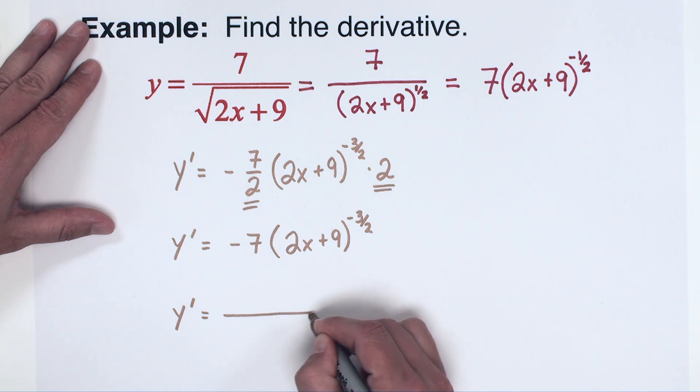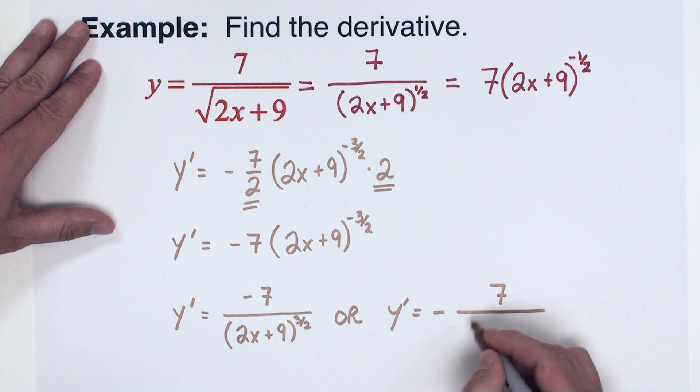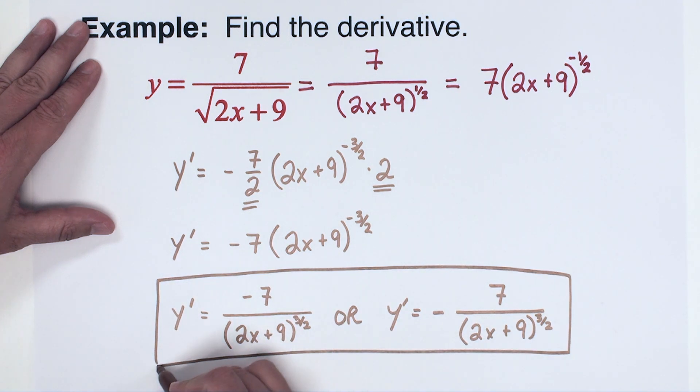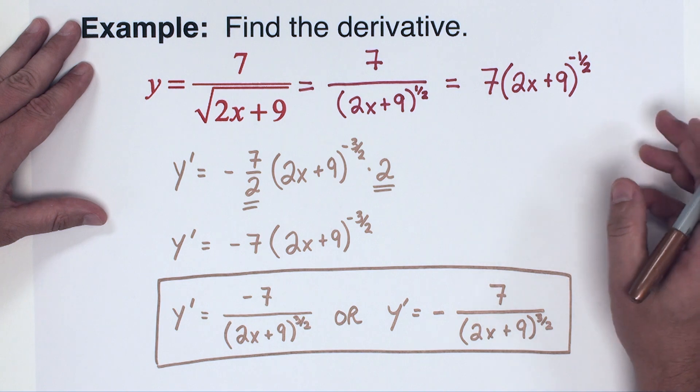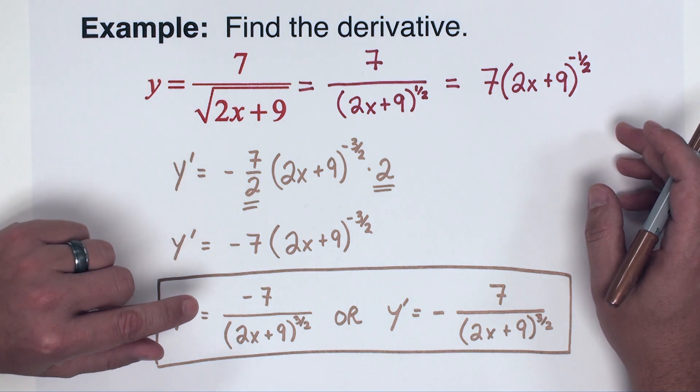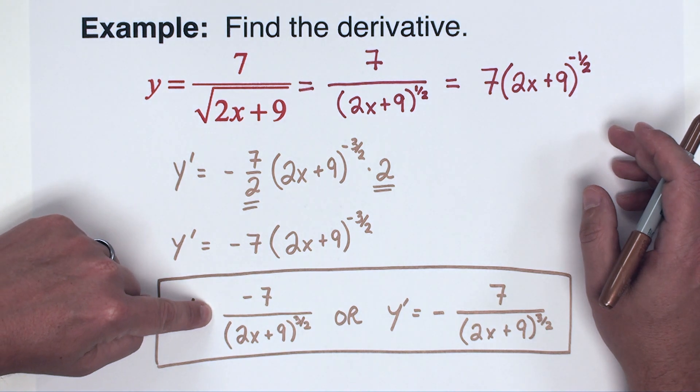So y prime is going to be negative 7, and then the denominator will have quantity 2x plus 9 to the positive 3 halves power. And of course that's the same as, you can take that negative and just pull it to the front of the fraction. So don't forget you can see it like that too. I think it's important to be able to look at your answer and know what other answers it's equivalent to, right? Because if you're checking answers with answer keys in text or online, sometimes the answers that you see, like maybe you look in the textbook and you see this answer but you worked out the problem and have this answer. It's important to know that these two answers are exactly the same thing and where you put that negative doesn't matter.